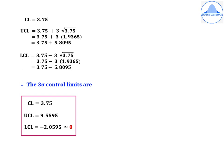Substituting in the control limits: CL = 3.75, UCL = 3.75 + 3√3.75 = 3.75 + 5.8095. Similarly, LCL = 3.75 − 3√3.75 = 3.75 − 5.8095. Therefore, the final 3-sigma control limits for the C chart are CL = 3.75, UCL = 9.5595, and LCL = −2.0595, which is approximated to 0.